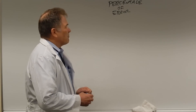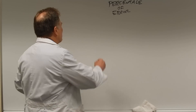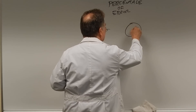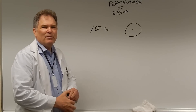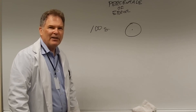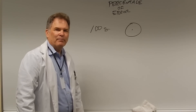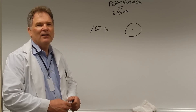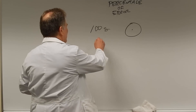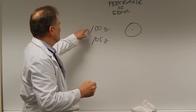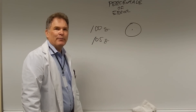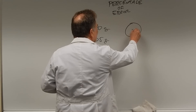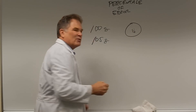Let's do an example. We were trying to weigh 100 grams — that was our target. We used one scale and thought we had 100 grams, but a more accurate scale later showed the actual weight was 105 grams. So the actual weight was 105 grams and the desired weight was 100 grams. The first step is to figure out how many grams you were off — the difference was 5 grams.